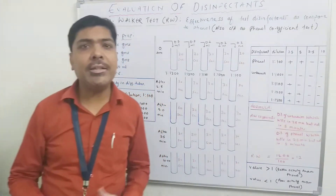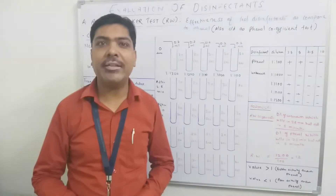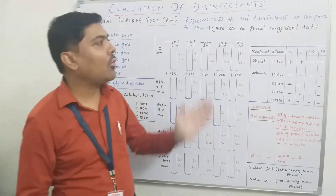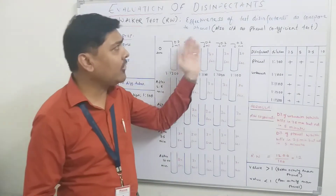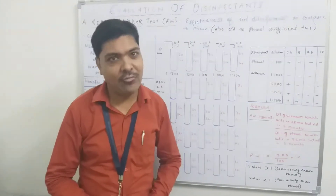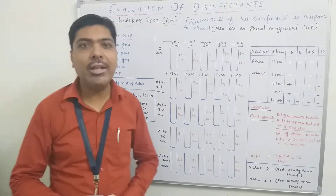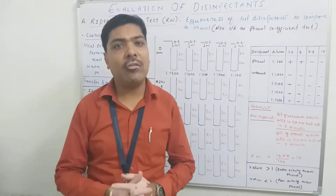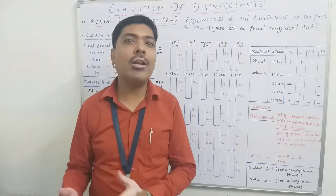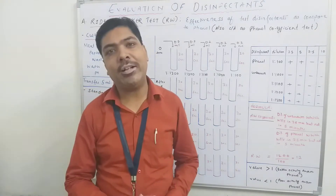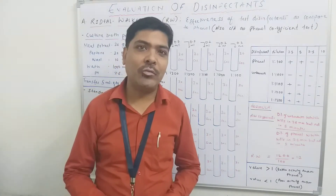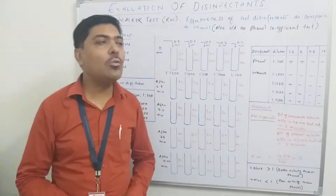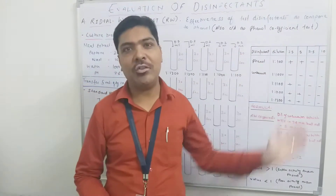Coming to the principle of the Riddeal-Walker test: it is based on the calculation of the effectiveness of the test disinfectant as compared to phenol. We are comparing the efficiency of any unknown or test disinfectant against phenol. That is why the Riddeal-Walker test is also called the phenol coefficient test.